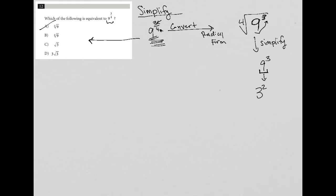So nine to the third power can be rewritten as three squared to the third power, which equals three to the sixth power. That means instead of a fourth root of nine to the third, I have a fourth root of three to the sixth power. Looking at my answer choices, I see I'm down to having a three under the radical, so I'm going to cross out choice B. Choices C and D both have a three there.